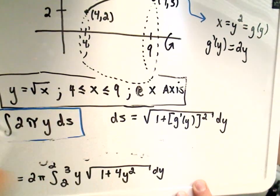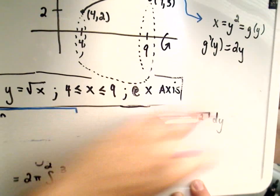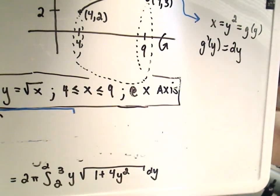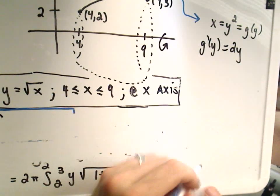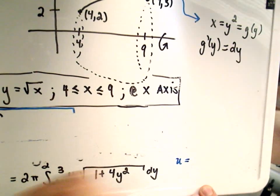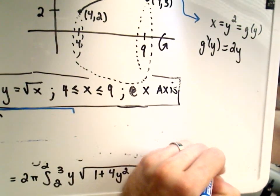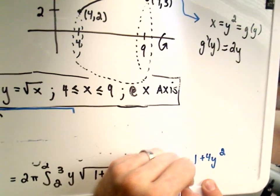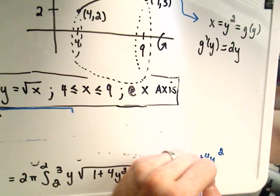So to integrate this thing, again, let me give myself some more room. Sorry, I've got a bit of a cold here. Okay, so our u-substitution is going to be 1 plus 4y squared.